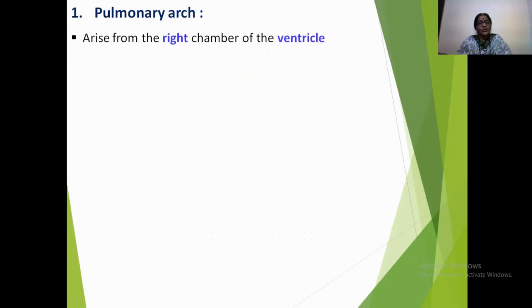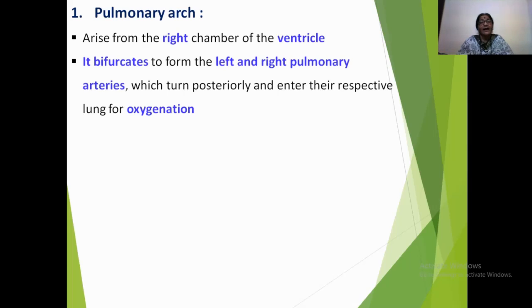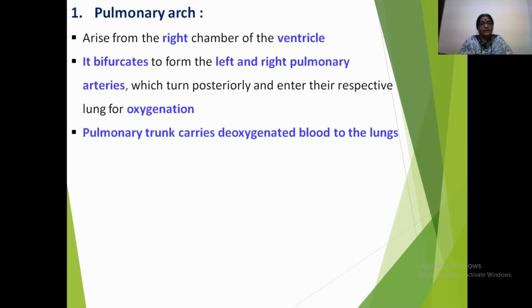The pulmonary arch arises from the right chamber of the ventricle and divides to form the left and right pulmonary arteries, which turn posteriorly and enter their respective lungs for oxygenation. The pulmonary trunk carries deoxygenated blood to the lungs.